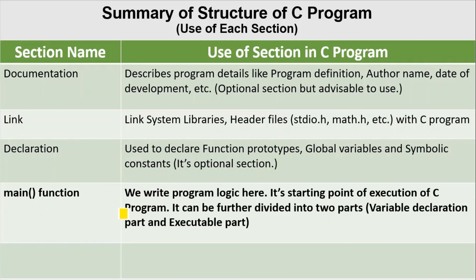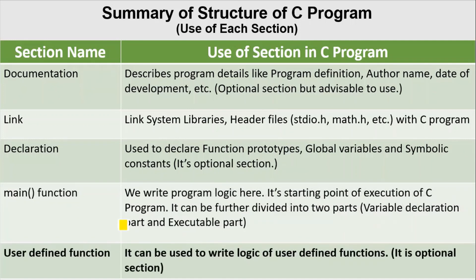The main function is where we write the program logic. It is the starting point of execution of a C program and can be further divided into two parts: variable declaration part and executable part. The last one is the user defined section, which can be used to write the logic of user defined functions. This is also an optional section that we can use according to our program requirement.